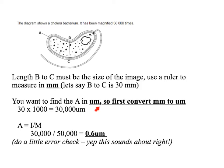We've been asked to work out the actual size in micrometres, so first of all we've got to convert millimetres into micrometres. So 30 millimetres times by 1000 gives you 30,000 micrometres — we've got the right units. So now we do: the actual size is the image divided by magnification using the triangle. So 30,000 divided by 50,000 — remember the magnification is 50,000 — gives you 0.6 micrometres.